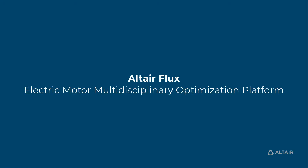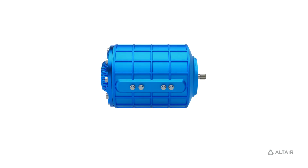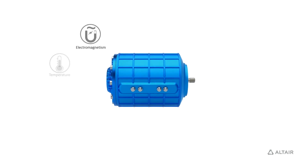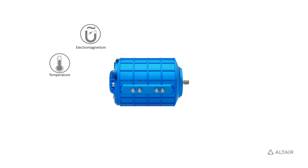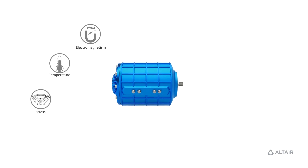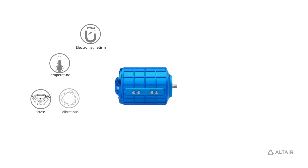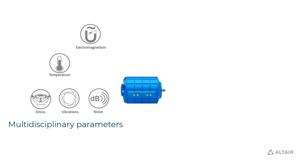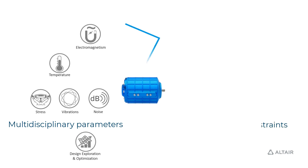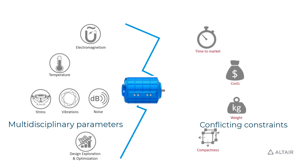Designing an efficient electric motor has always been a complicated set of tasks. The Altair Automated Multidisciplinary Optimization Platform is a solution considering both parameters strongly interacting with each other, with an optimization-driven multi-physics approach and increasingly conflicting project constraints.